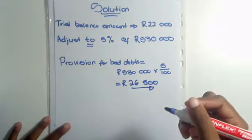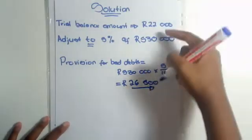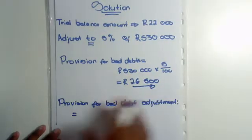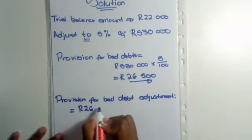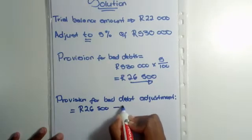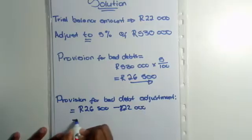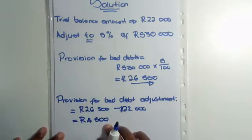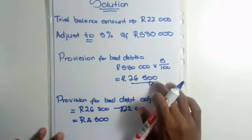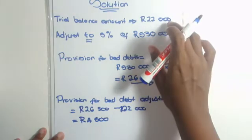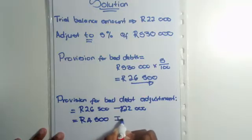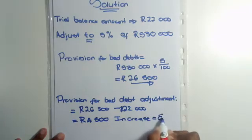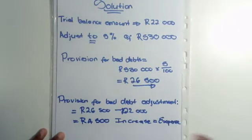Now, what is our provision for bad debts adjustment? It is the amount that will take the current R22,000 to the required R26,500. So: provision for bad debts adjustment = R26,500 − R22,000 = R4,500. This adjustment takes us from R22,000 to R26,500. Since we are moving from R22,000 to R26,500, we are increasing, which means this amount is an expense and will be recorded in operating expenses.